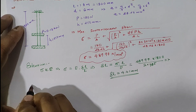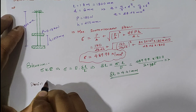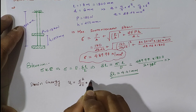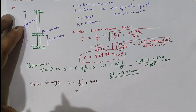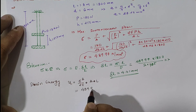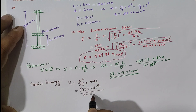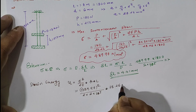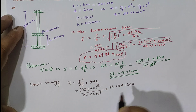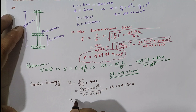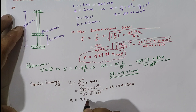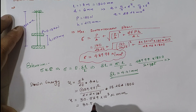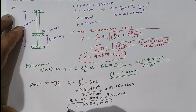For strain energy, U = (σ² / 2E) × Volume, where Volume = Area × Length. Substituting σ = 489.97 N/mm², E = 2 × 10⁵, area = 28.26 mm², and length = 1800 mm, the energy stored is 30.529 × 10³ N·mm.